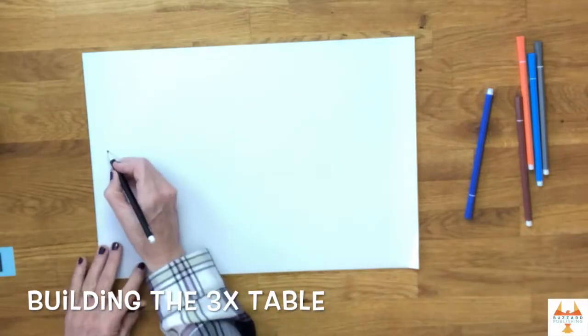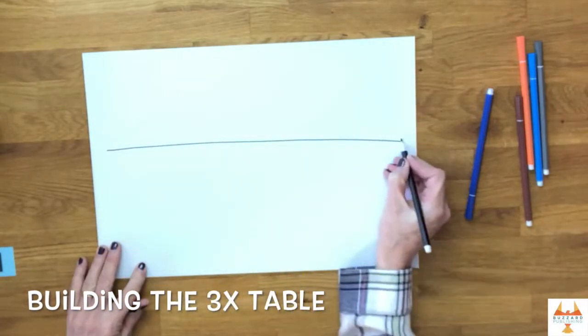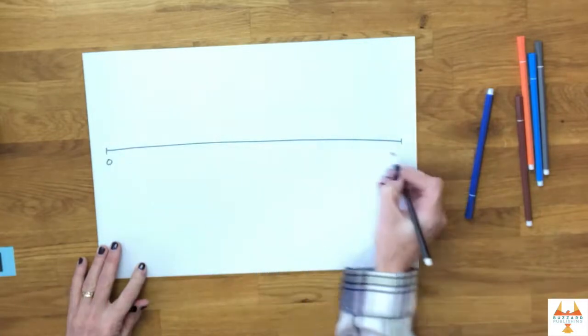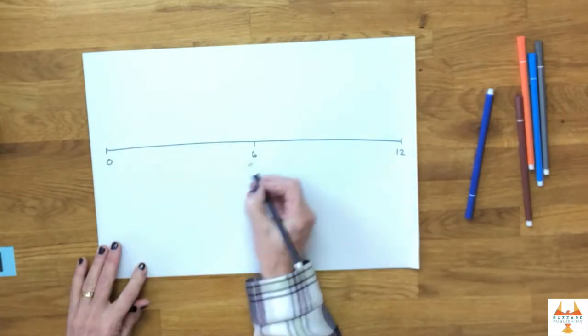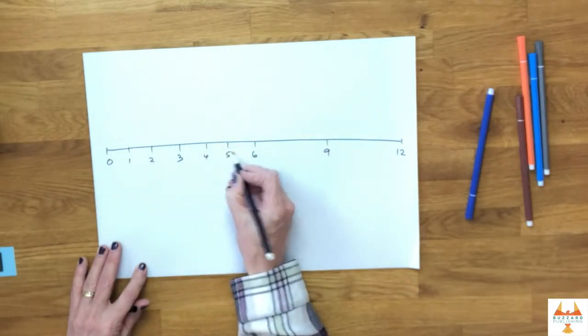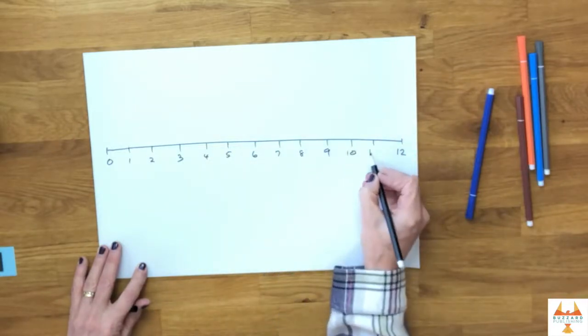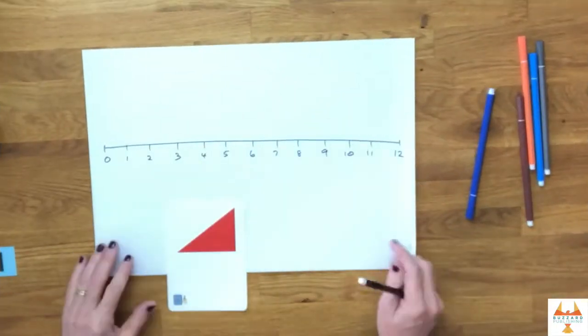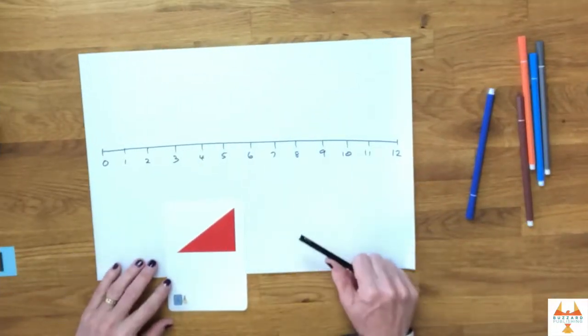We're going to build the three times table today and I'm going to do it on a line so it gives us a visual prompt to hook it into. I'm just going to pop the divisions on like this, so we've got these to write our facts onto in a minute. We're going to be looking at the three times table from zero groups of three to 12 groups of three.